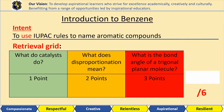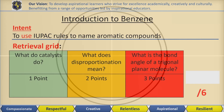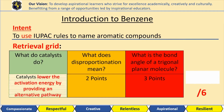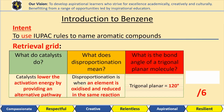We've got the retrieval grid here. Pause the video, see if you can answer these questions. Catalysts lower the activation energy by providing an alternative pathway. Disproportionation is when an element is oxidized and reduced in the same reaction. The bond angle of a trigonal planar molecule is 120 degrees.